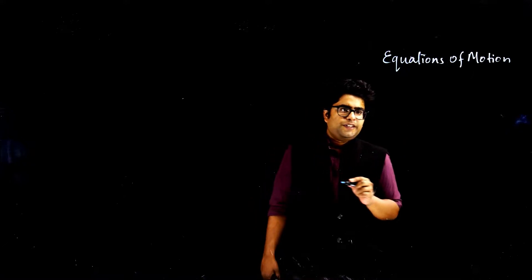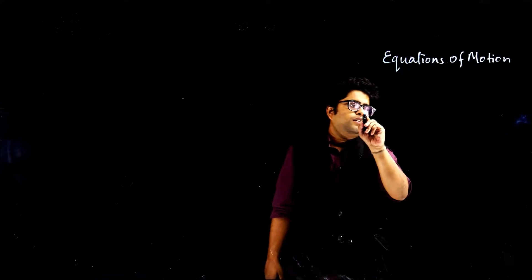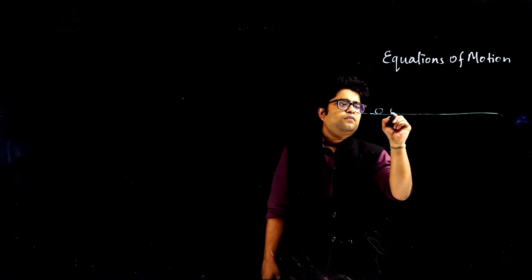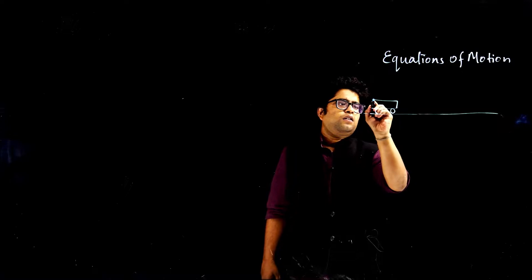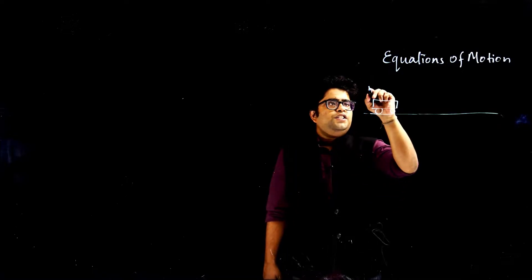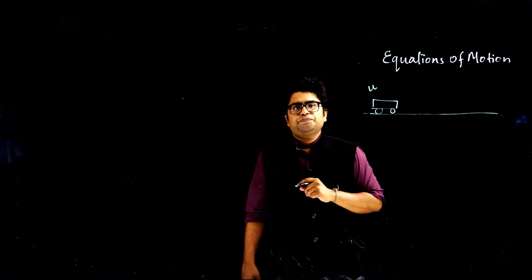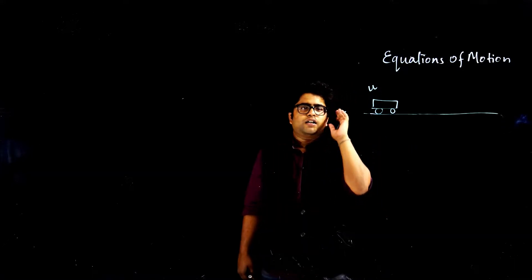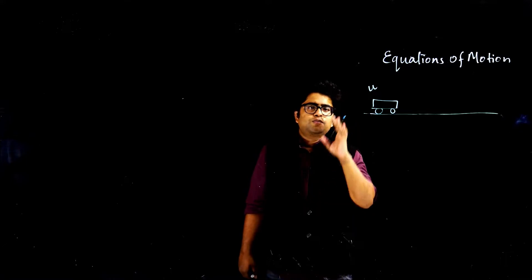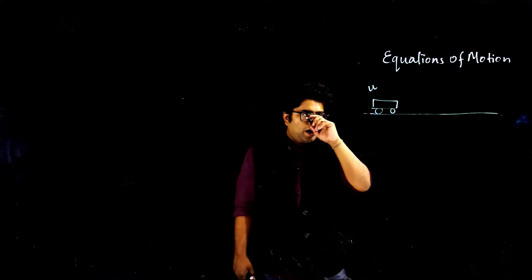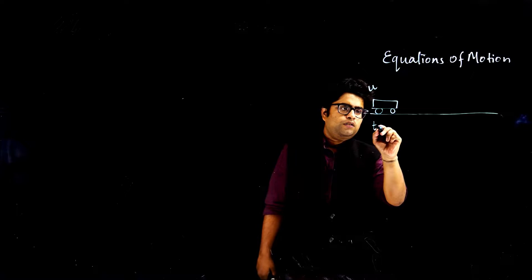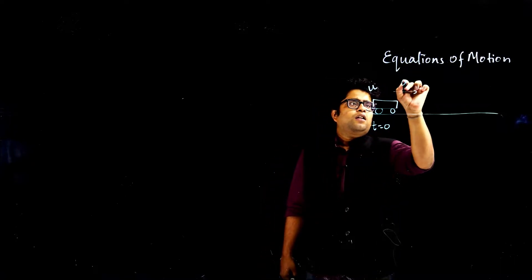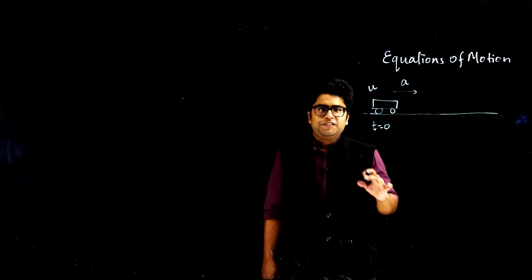Let's consider the situation. There's a car which was initially moving with an initial velocity u — some value like 10 meters per second, whatever value you want. The moment I started observing this car, it was moving with a certain velocity at time t equals 0, and the car is moving under constant acceleration, or uniform acceleration — both mean the same thing.